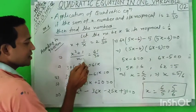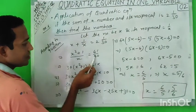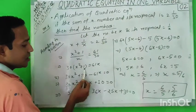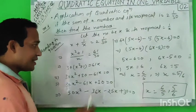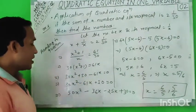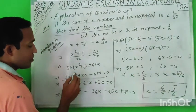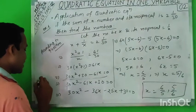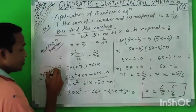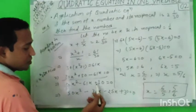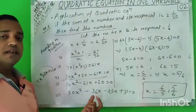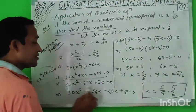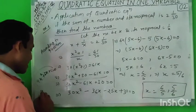Now do cross multiplication: 30(x² + 1) = 61x. This gives us 30x² + 30 minus 61x is equal to zero. I brought everything to one side and set it equal to zero. Here we have a quadratic equation where the power of x is 2. Now the standard form of a quadratic equation is ax² + bx + c = 0. So I write it as 30x² - 61x + 30.